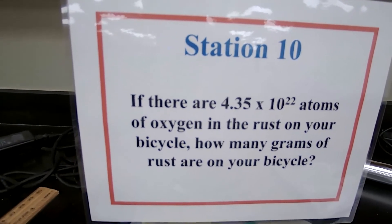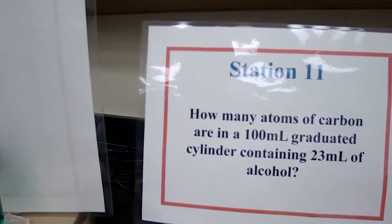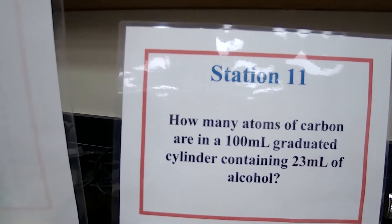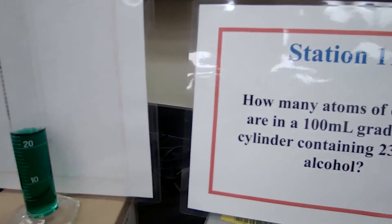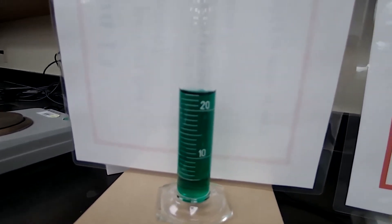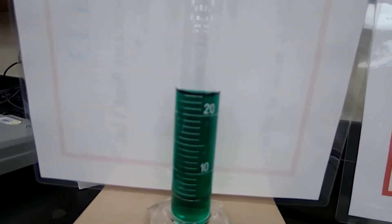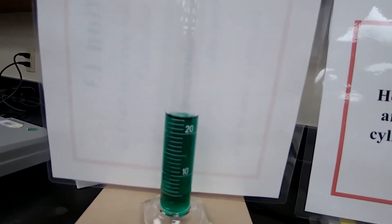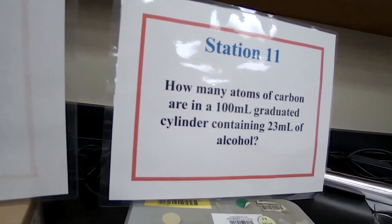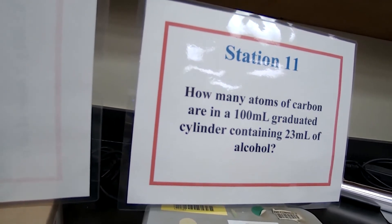At station 11, 23 milliliters of alcohol — which is ethanol — is in a graduated cylinder. Again, the green color is for visibility. Just take the measurement of 23 milliliters of the alcohol that is given, calculate the moles, and answer the question.